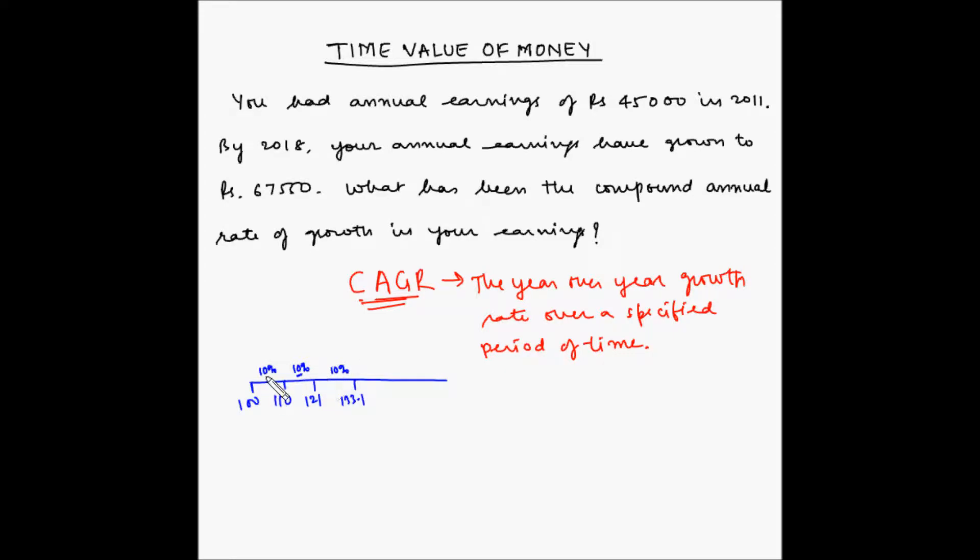So we had 10% on 100 and then we got Rs 110. And then this 10% was not calculated on the original investment but calculated on the total at the end of the previous year. Similarly, this 10% was calculated on the total at the end of the previous year and so on. So same way,